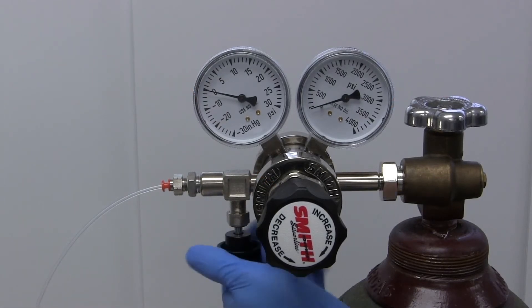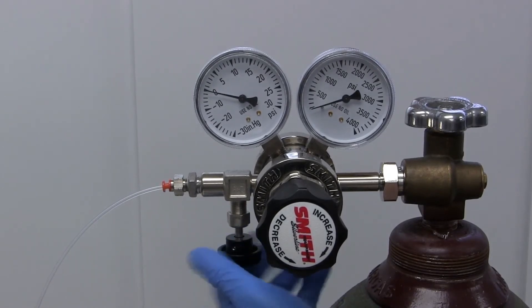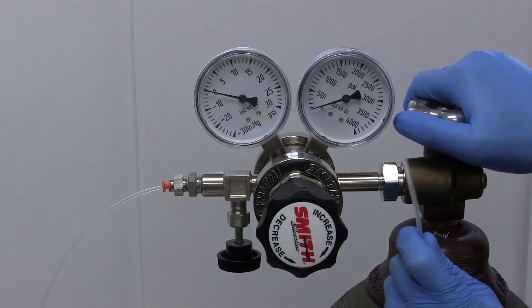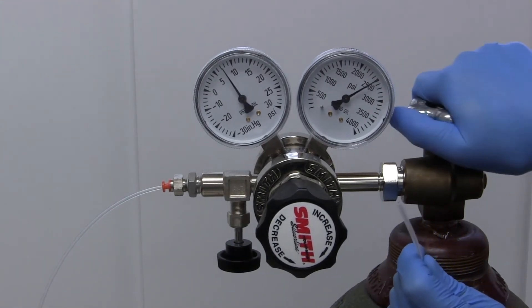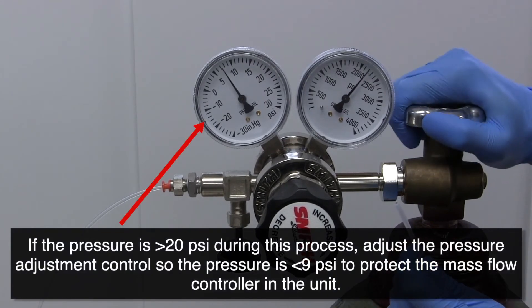Fully open the output valve on the regulator. Then, partially open the valve on the argon cylinder, quickly closing it again. Do this several times to flush the line.